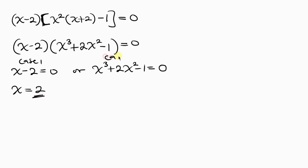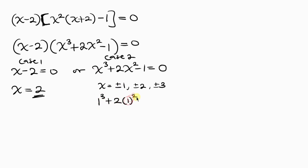Now let's move to Case 2: x³ + 2x² - 1 = 0, a cubic equation. We'll test values x = ±1, ±2, ±3 to find a factor. Testing x = 1: 1³ + 2(1²) - 1 = 1 + 2 - 1 = 2, which is not zero. So x = 1 is not a root.